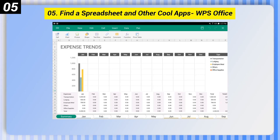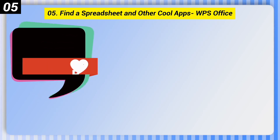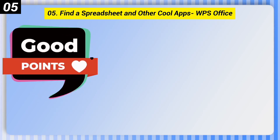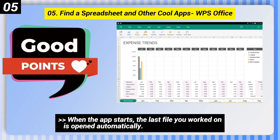Number 5: Find a spreadsheet and other cool apps — WPS Office. Here are some good points of this one. It's compatible with Microsoft Excel and Google Sheets. When the app starts, the last file you worked on is opened automatically.